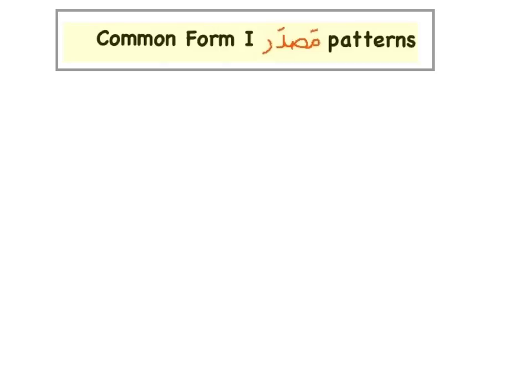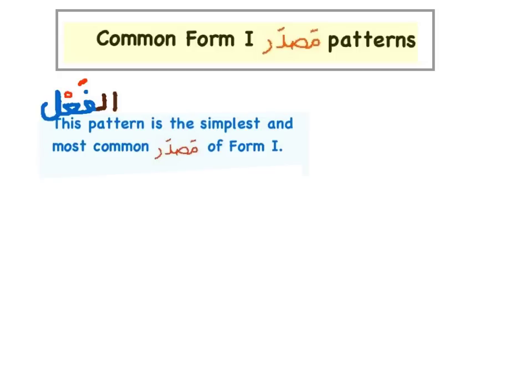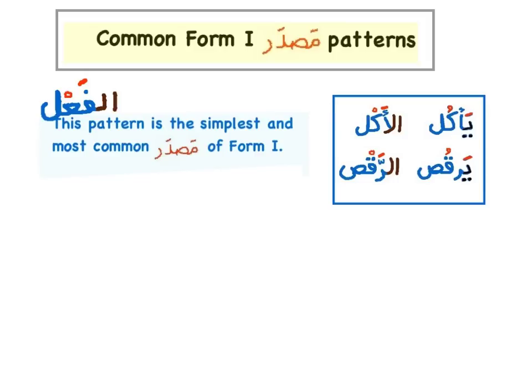Common Form 1 Mazdar patterns: Al-Fa'l. This pattern is the simplest and most common Mazdar of Form 1. For example, يأكل (he eats) and يرقص (he dances). The Mazdar of يأكل is الأكل (eating or to eat), and the Mazdar of يرقص is الرقص (to dance, dancing).